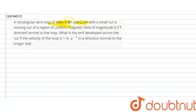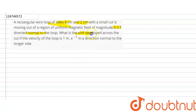It means that it is a small cut moving out, with the region of the magnetic field. The magnetic field is 0.3 tesla. It is directed normal to the loop — the normal to the loop is perpendicular. What is the induced EMF? This is the induced EMF.